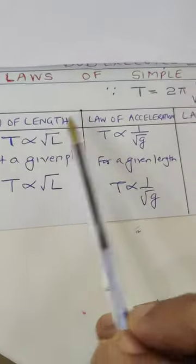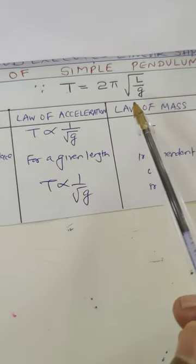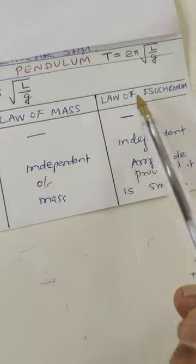These are the four laws: law of length, law of acceleration, law of mass, law of isochronism.